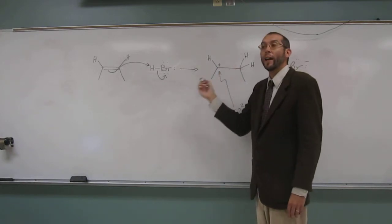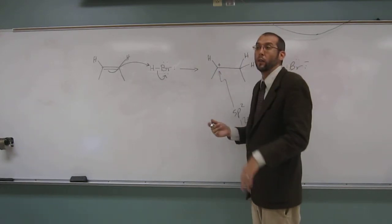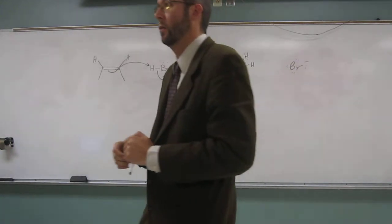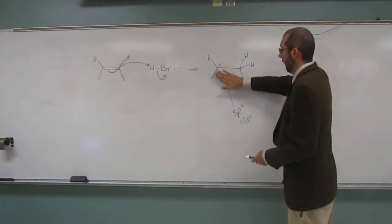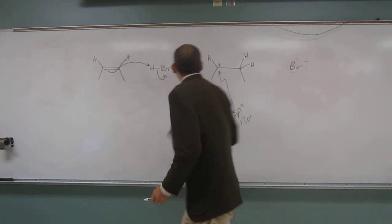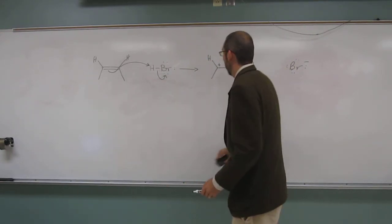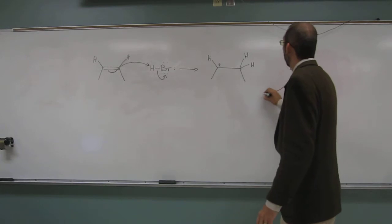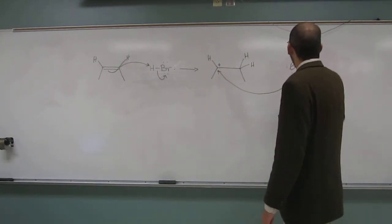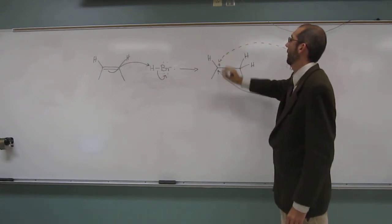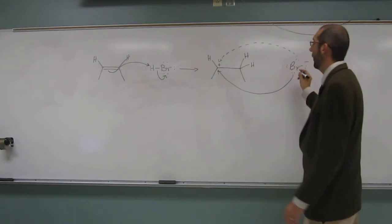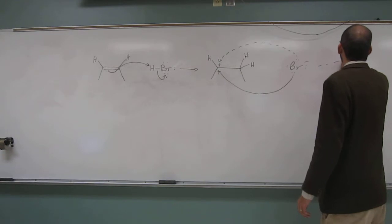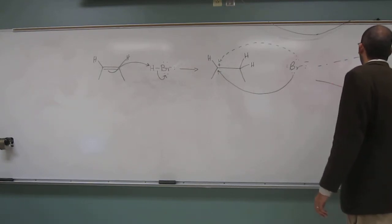So since this is trigonal planar, the electrophile can be attacked from either side equivalently. So I can attack it from the back side or from the front side, because neither one is sterically encumbered. So in other words, the reaction is going to be performed in two different ways. The bromine is going to attack. It can attack from the front like that. Or it can attack from the back like that. That'll be from the back. That'll be from the front.